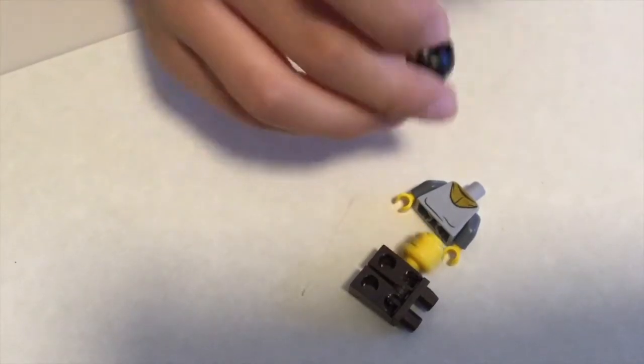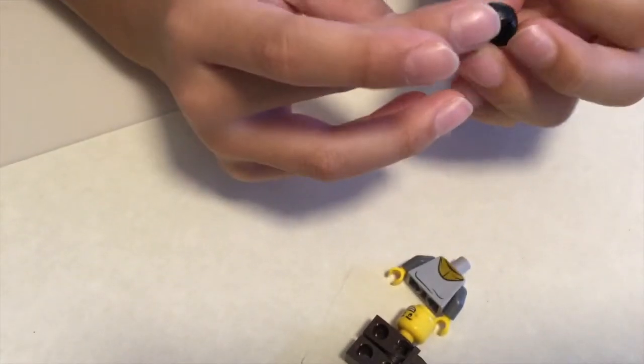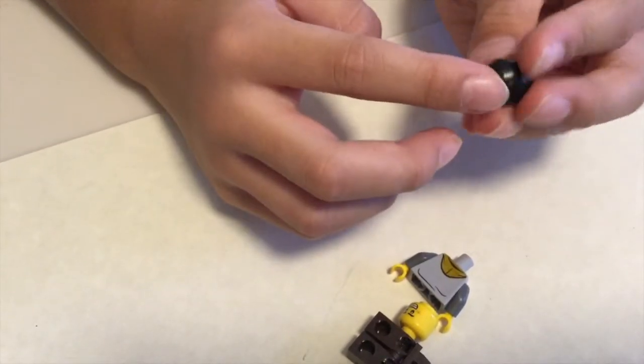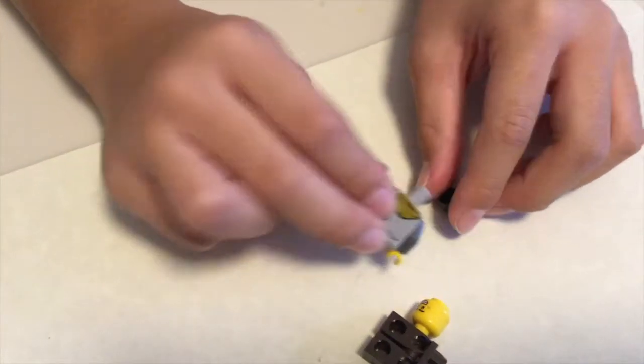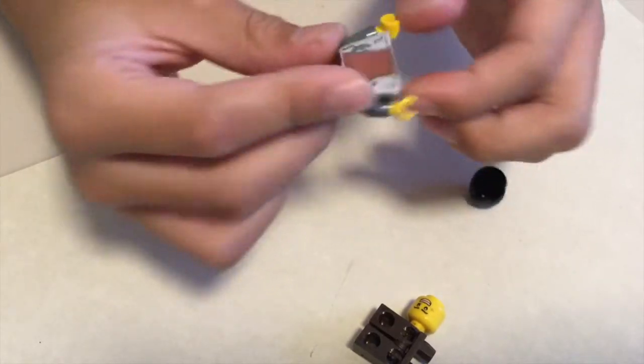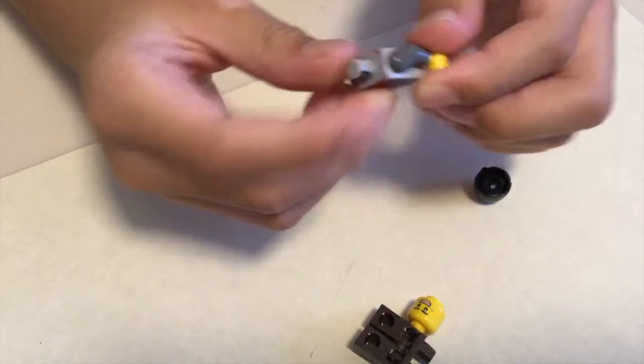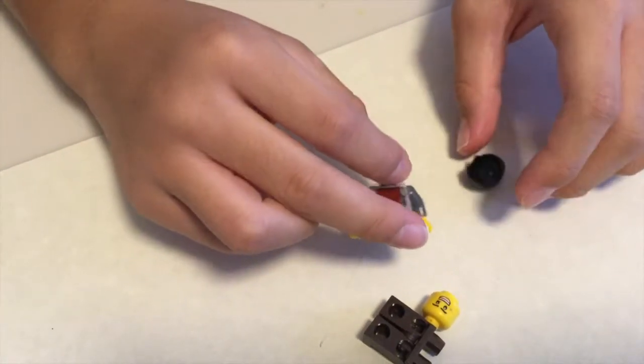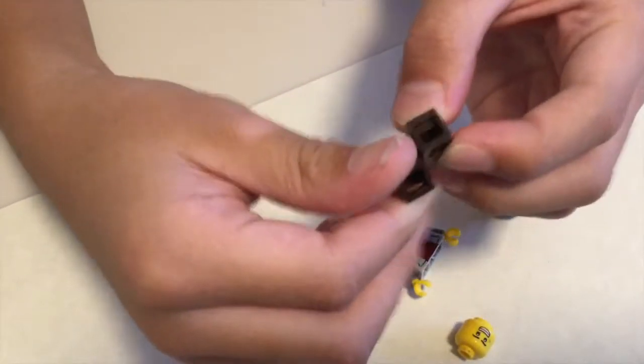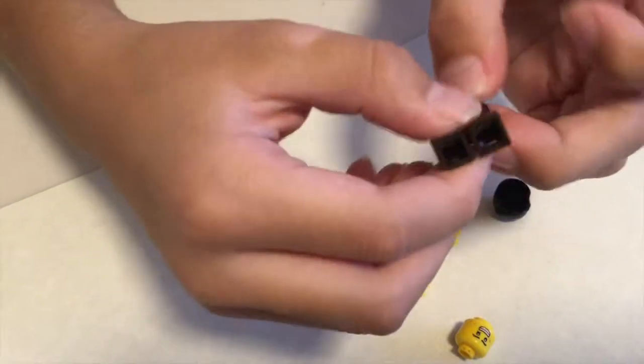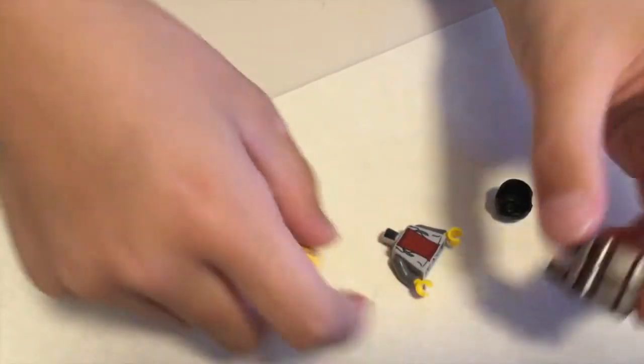The reason I used this hair piece for Michael is because his hair's kind of flat, so I think it was pretty good. I used this jacket, this torso, because he wears gray jackets. I use these legs because I think he has pants like this. I use this head because the smile looks like this.